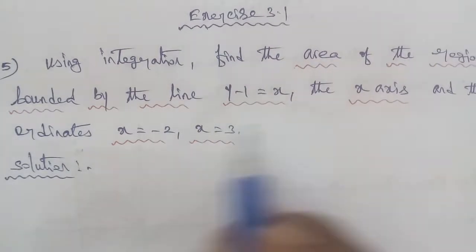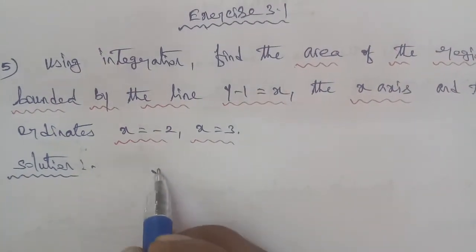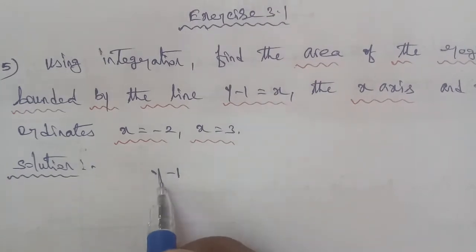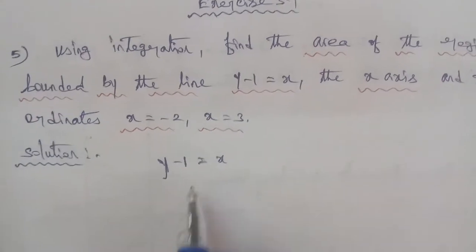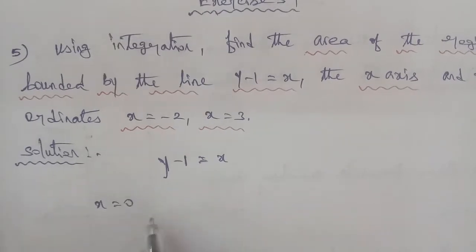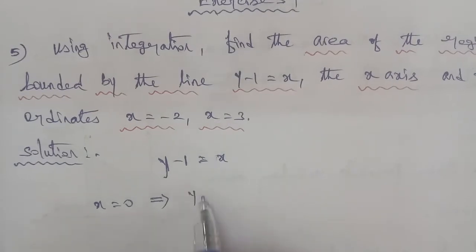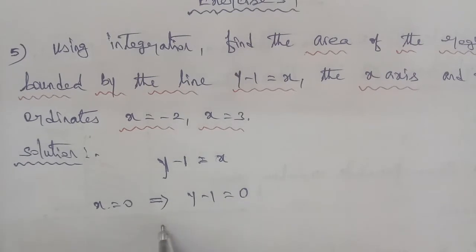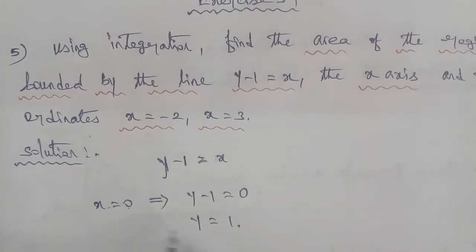First, this question is y minus 1 equal to x. Now, if we have points, we follow the same process as before. Put x equal to 0 and find y. So x is equal to 0, giving 0 minus 1 equals y, so y is equal to 1. That is, the point is x equal to 0 and y equal to 1.